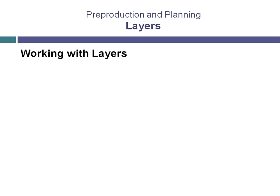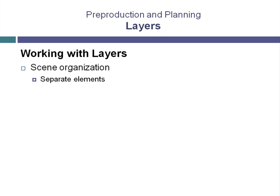Another aspect of pre-planning your production deals with scene organization. One aspect of scene organization that we'll talk about now is working with layers. If you're familiar with a CAD program like AutoCAD, then you're probably familiar with the idea of using layers to organize your scene. If you are new to the idea of layers, they allow you to separate elements in your scene by assigning each object to a particular layer.